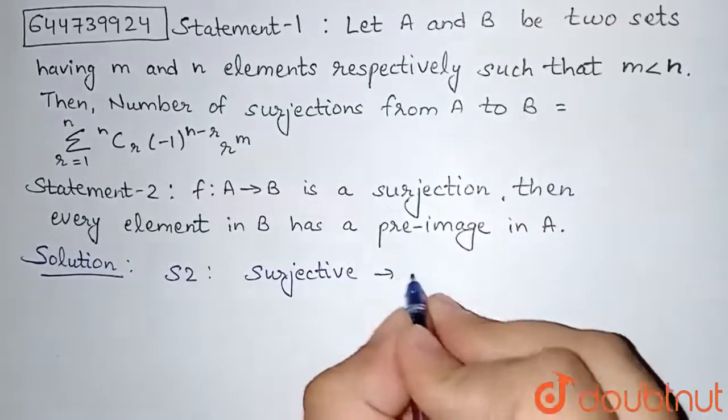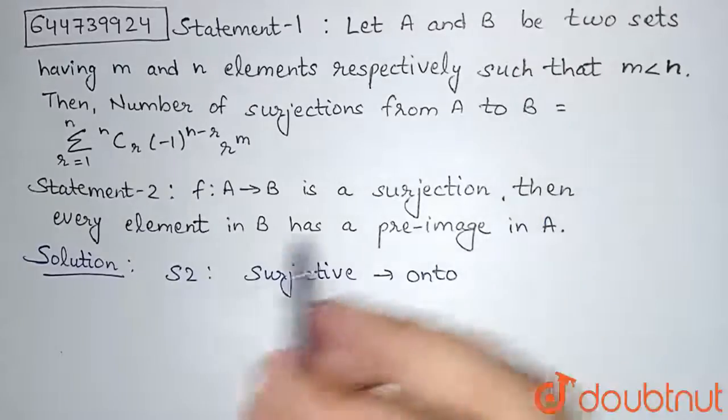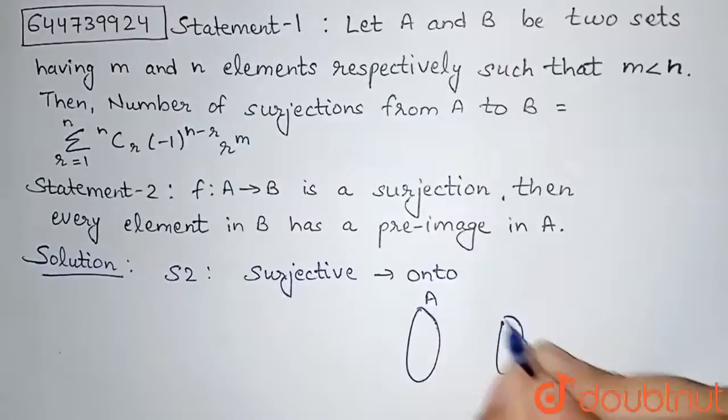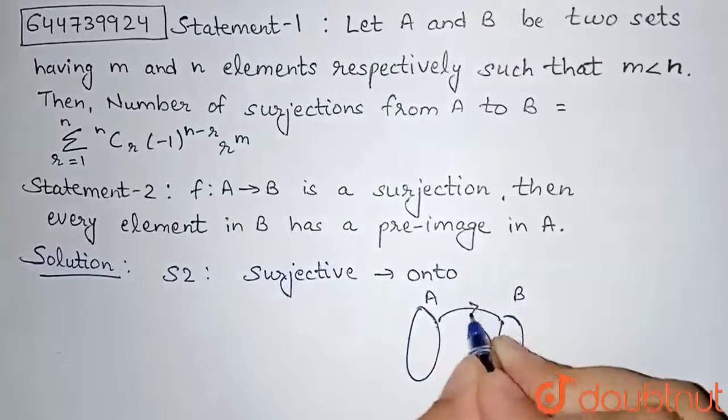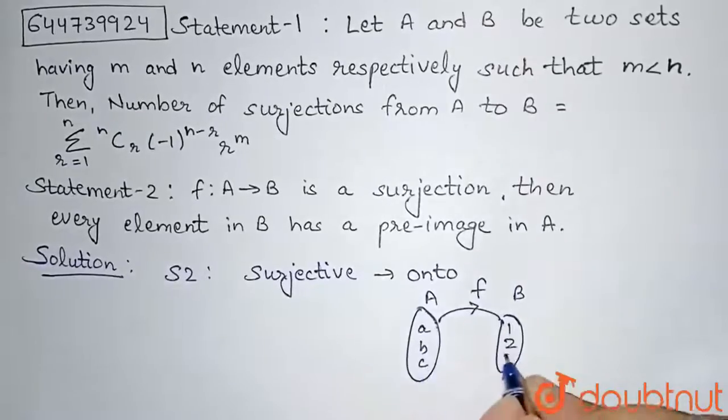So surjective means onto function and we know that the definition for onto function is that every element in B, see our function is from A to B. Like this, let's say here the elements are A, B, C and here I have 1, 2, 3.